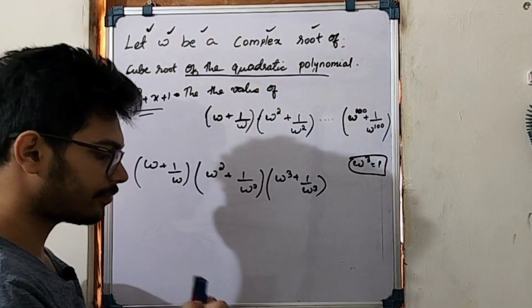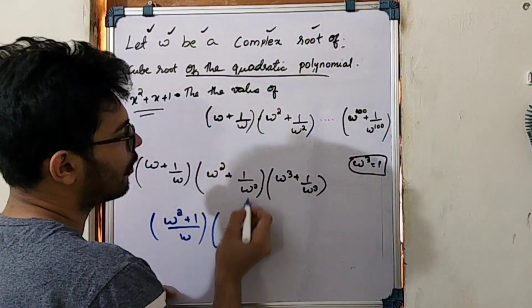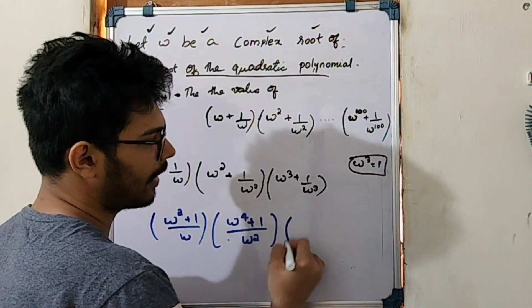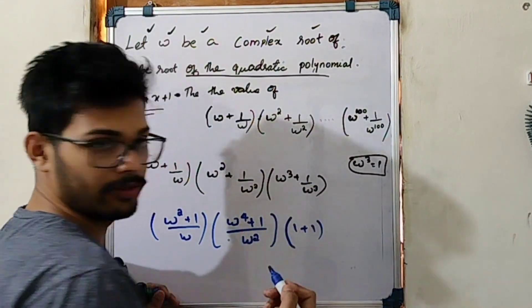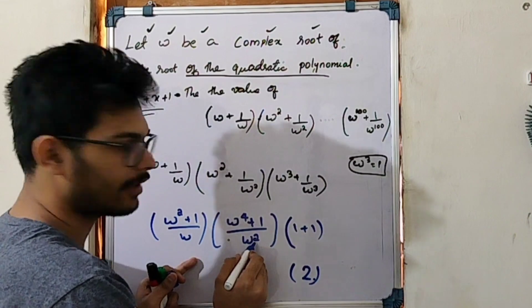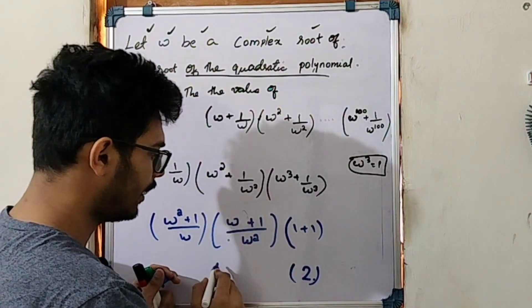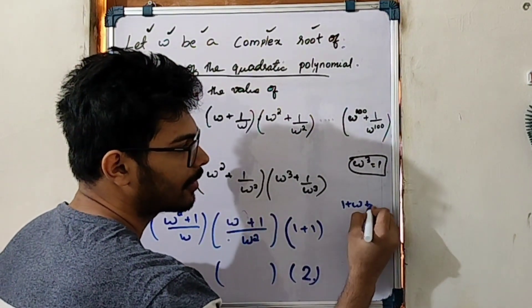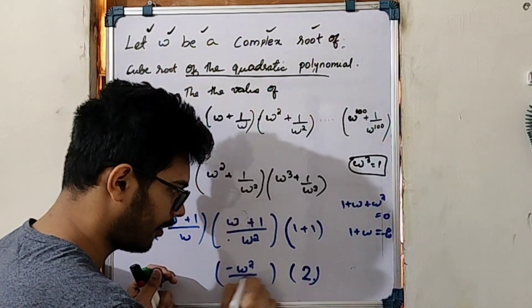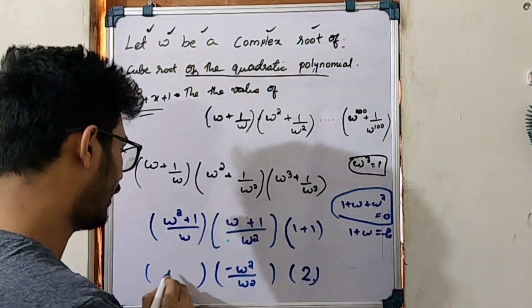By looking at the cross multiply, we add the omega squared value. This value should be obtained. We use 1 plus omega squared, which equals minus omega. Since 1 plus omega squared equals minus omega, we get minus omega square fitting the value.